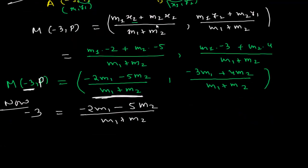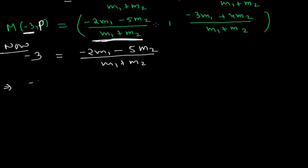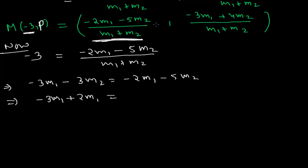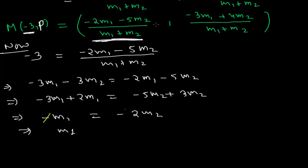Equating the x-coordinate: -3 = (-2·m1 - 5·m2) / (m1 + m2). Cross-multiplying: -3·m1 - 3·m2 = -2·m1 - 5·m2. Rearranging: -3·m1 + 2·m1 = -5·m2 + 3·m2, giving -m1 = -2·m2. The negatives cancel, so m1/m2 = 2/1. Our ratio is m1:m2 = 2:1.